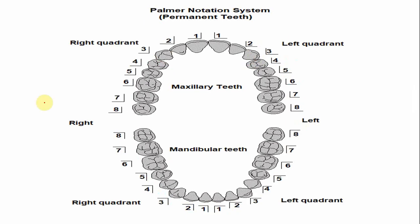In the Palmer notation system, numbers begin from the midline: one, two, three. So the number for the right maxillary canine is 3, with a symbol indicating it is of the right side. For the left maxillary canine, the number is also 3, but the symbol indicates it is of the upper arch and the left side. So both are 3 and 3.